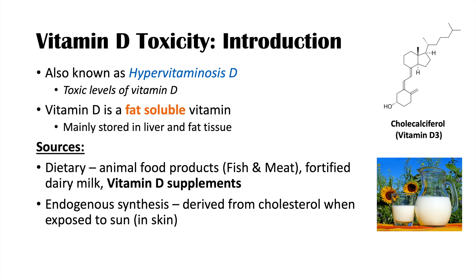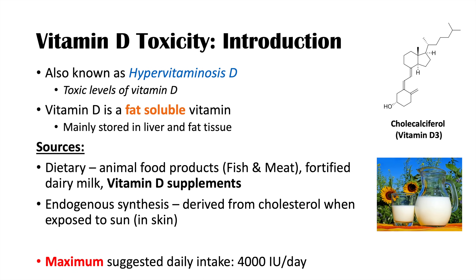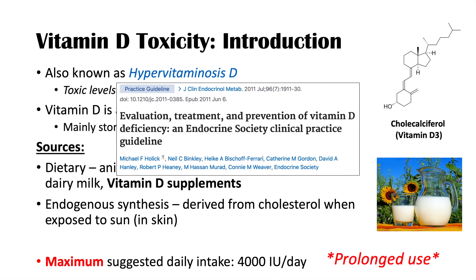Once we have vitamin D, it is used for several processes. Because vitamin D is a fat-soluble vitamin, it may be more difficult to get rid of compared to water-soluble vitamins that can be excreted by the urinary system. Because of this, there are maximum daily amounts suggested — one being a maximum of 4,000 international units per day, from the Endocrine Society Clinical Practice Guideline published in 2011.